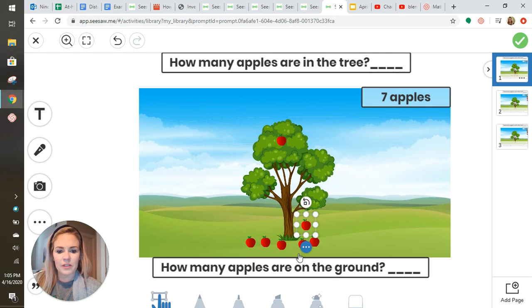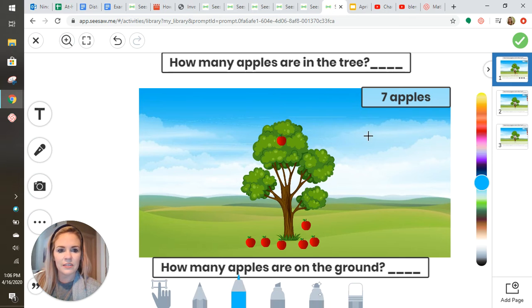Right now, the first question asks, 'How many apples are in the tree?' I'll select a utensil to write, and there's one apple in the tree.